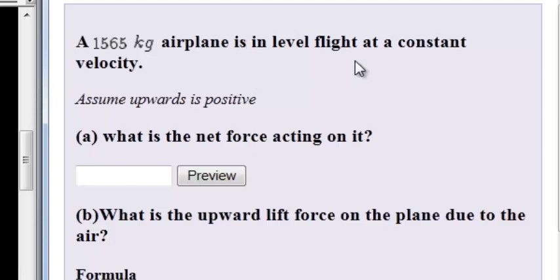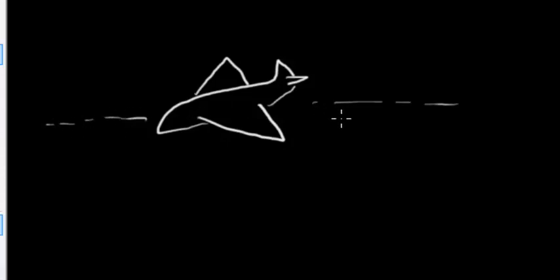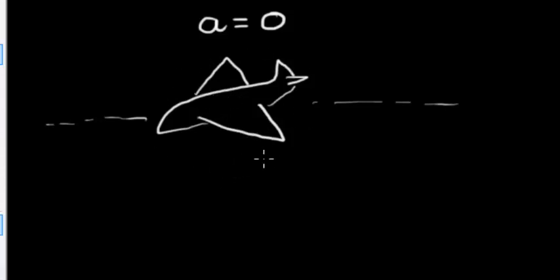A 1565 kilogram airplane is in level flight at a constant velocity. Assume upwards is positive. What is the net force acting on it? Let's draw this plane and think about what level flight and constant velocity tell us. Constant velocity means acceleration is equal to zero. Before drawing any conclusions, let's draw a force diagram for this scenario.